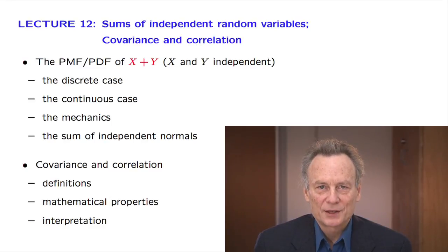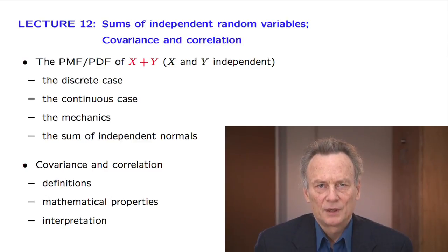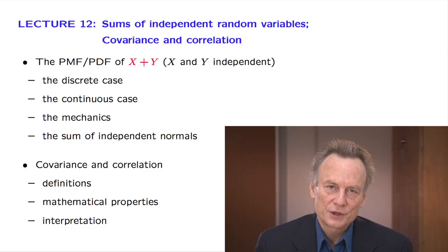This lecture consists of two parts that deal with two rather different topics. In the first part, we look into an important special case of a derived distribution problem. We start with two independent random variables with known distributions and wish to find the distribution of their sum.